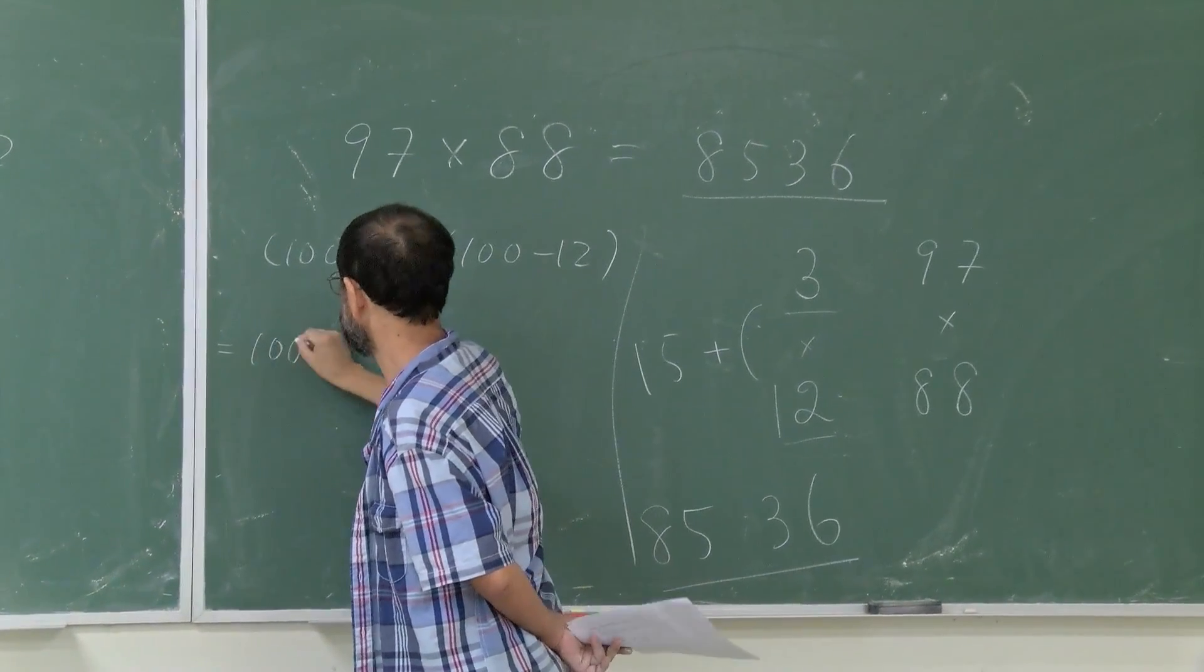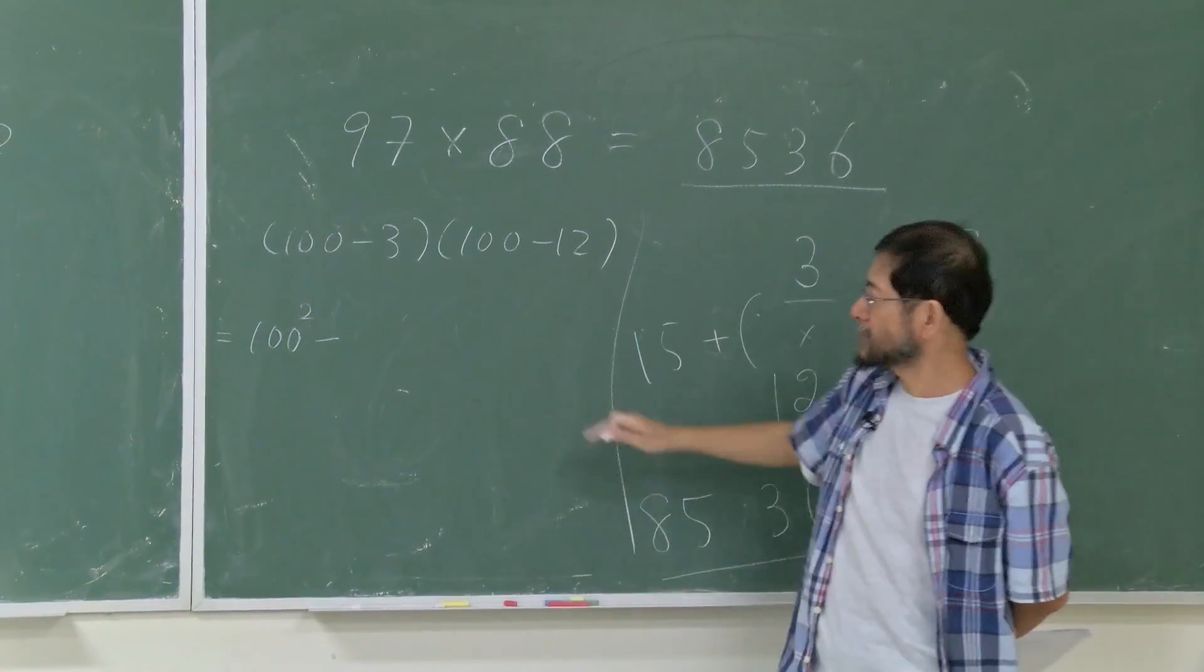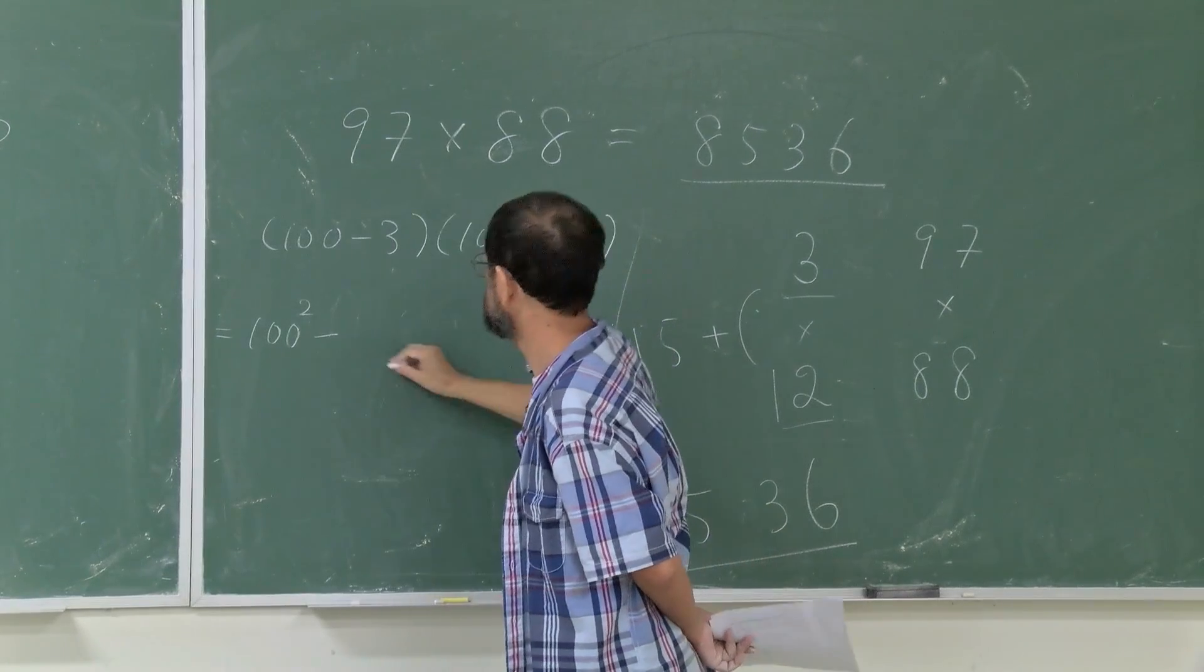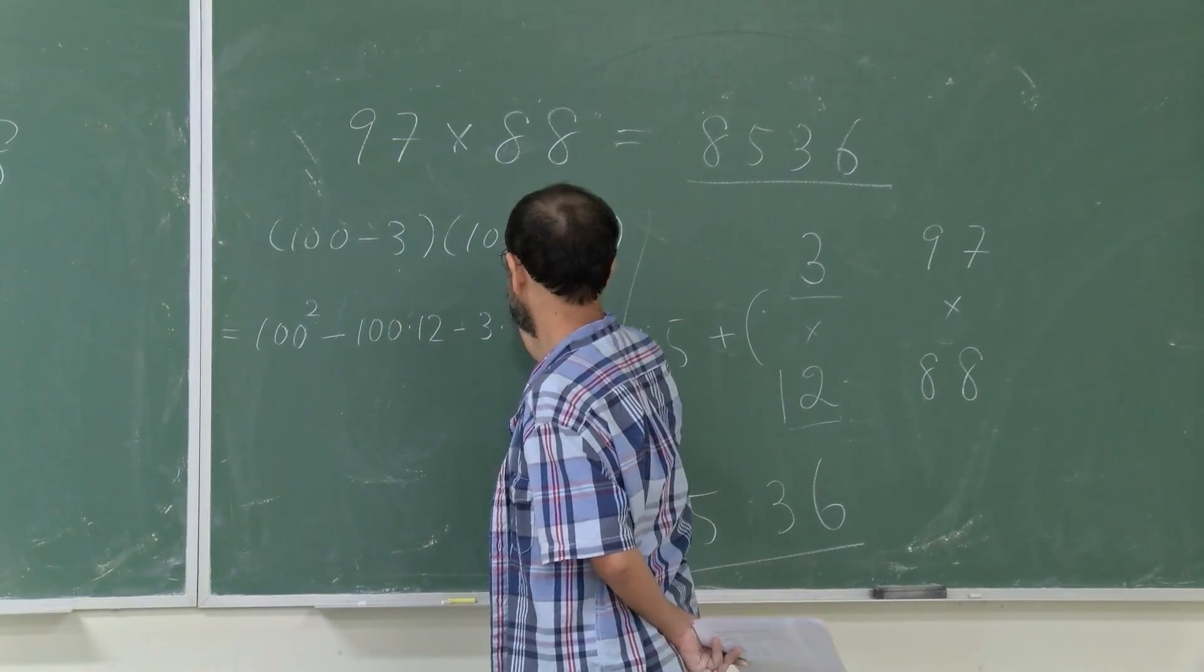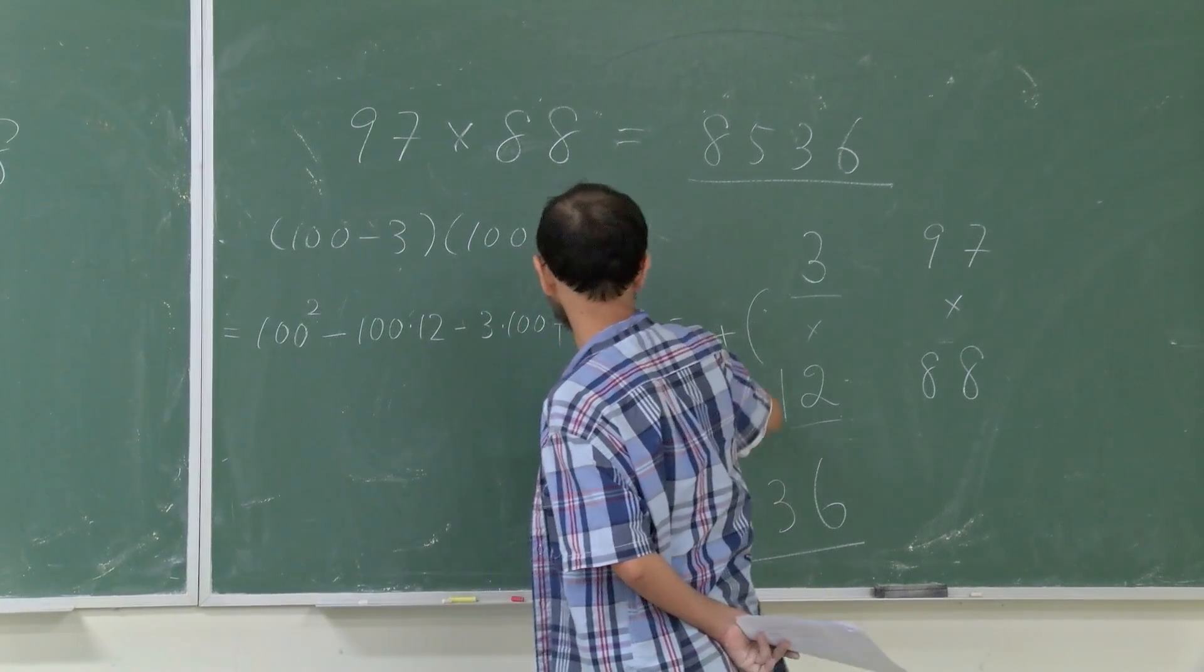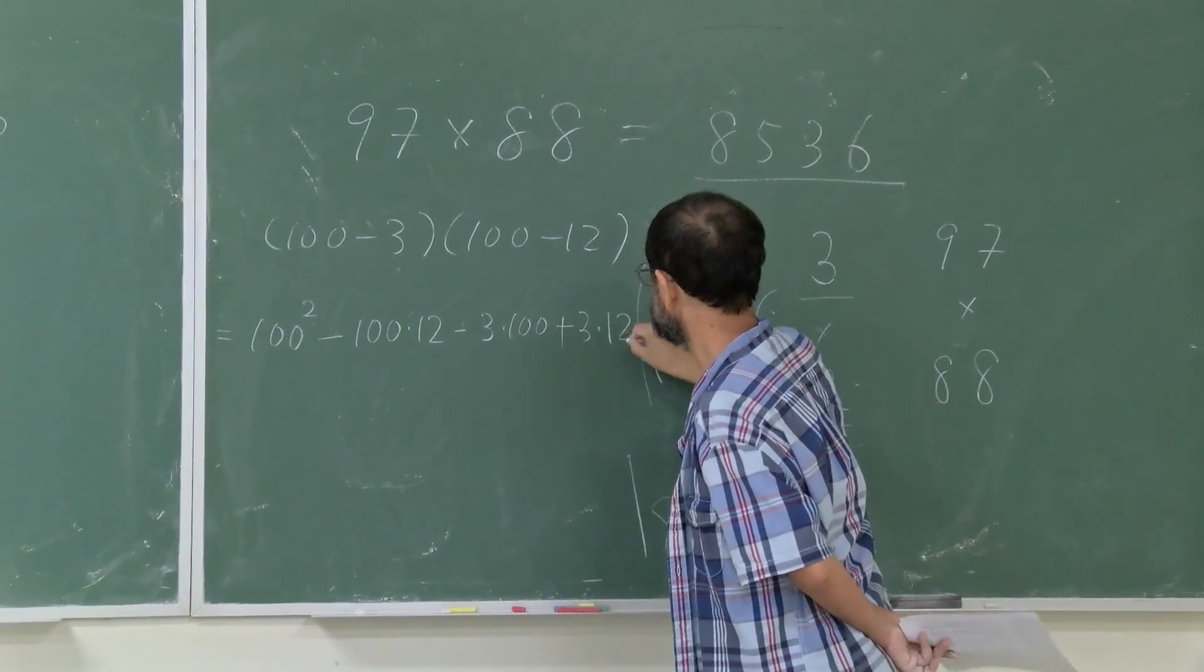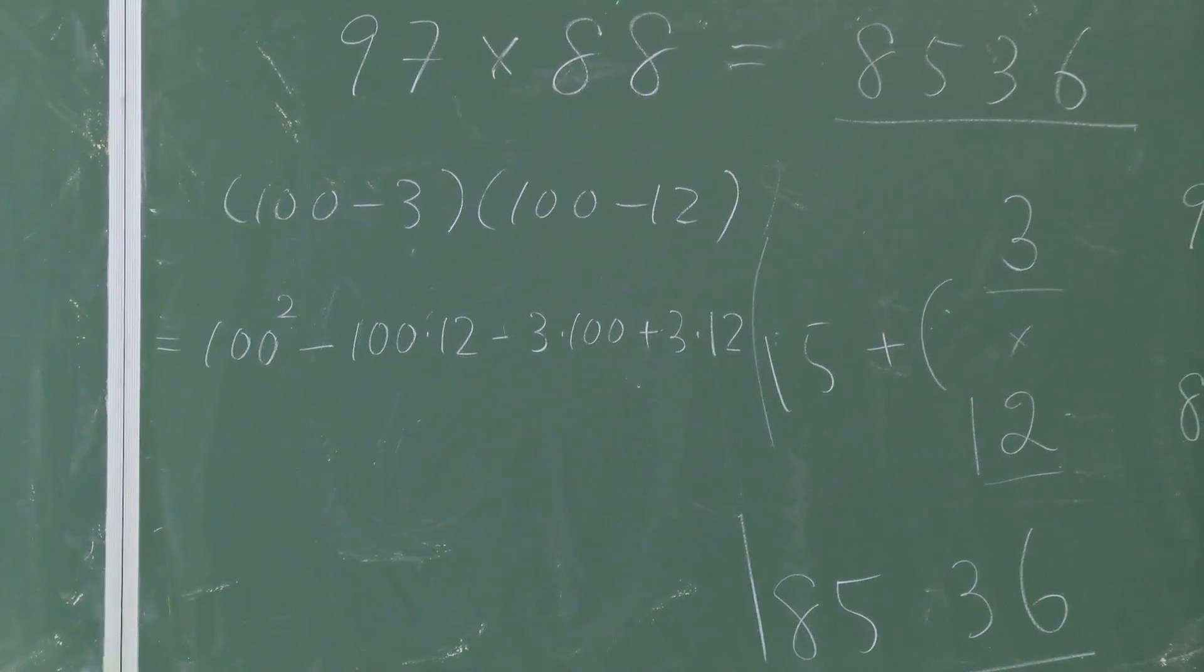Now I apply FOIL to this. So I have 100 times 100 squared. Then I can do the shortcut—I combine. Let me just do that: 100 times 12 minus 3 times 100 plus 3 times 12 by applying FOIL to this.